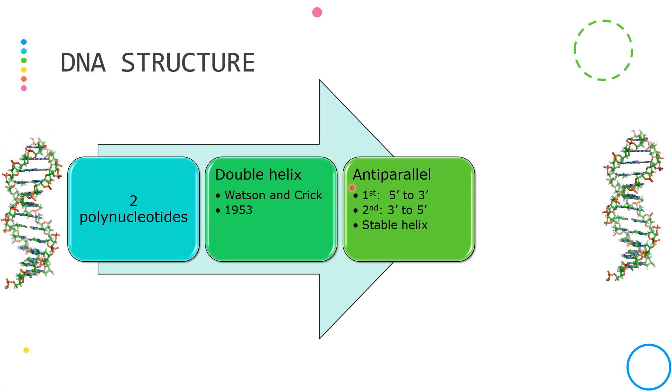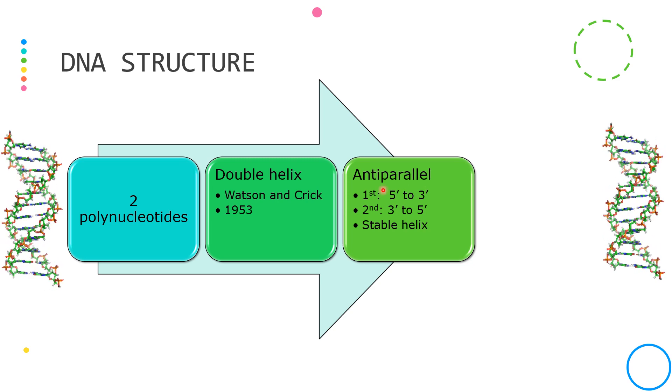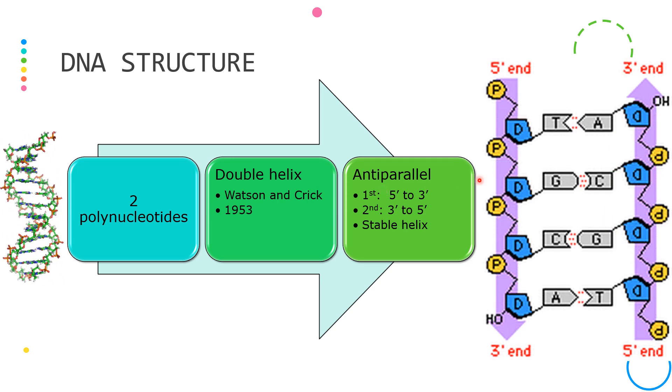The two polynucleotides are anti-parallel with each other. This means that they run in different directions. One oriented from the 5' direction going to the 3' direction and the other from the 3' to the 5' direction.